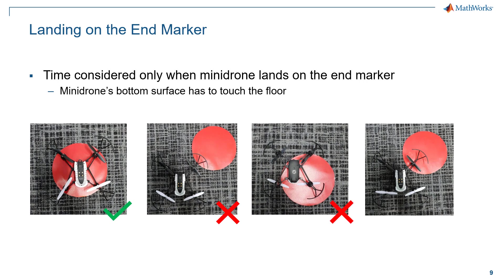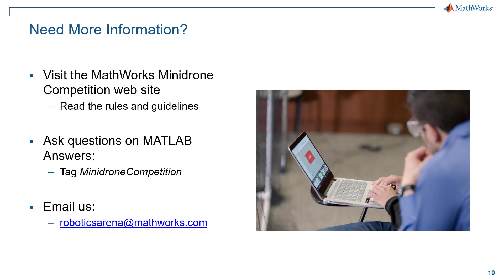The third one is again wrong because the Minidrone has landed upside down on the circular marker, and the fourth one is correct because a part of the Minidrone has landed on the circular marker.